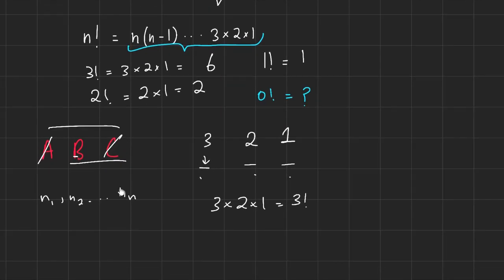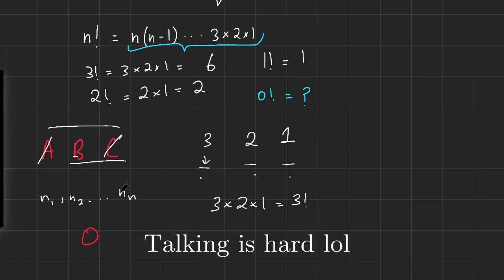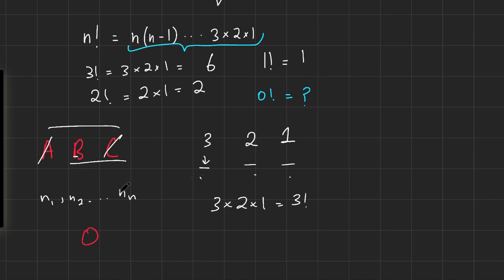With this definition, can we tackle what 0 factorial is? If I had zero cards and wanted to shuffle them, I could just leave it as it is — that's one way. Because if I had two cards A, B, one way is to leave it as is, another is to reverse to B, A. If I had one card A, the only way is to leave it as is. Likewise, with no cards, one way is to leave it as is. So that gives us some intuition that perhaps 0 factorial equals 1.